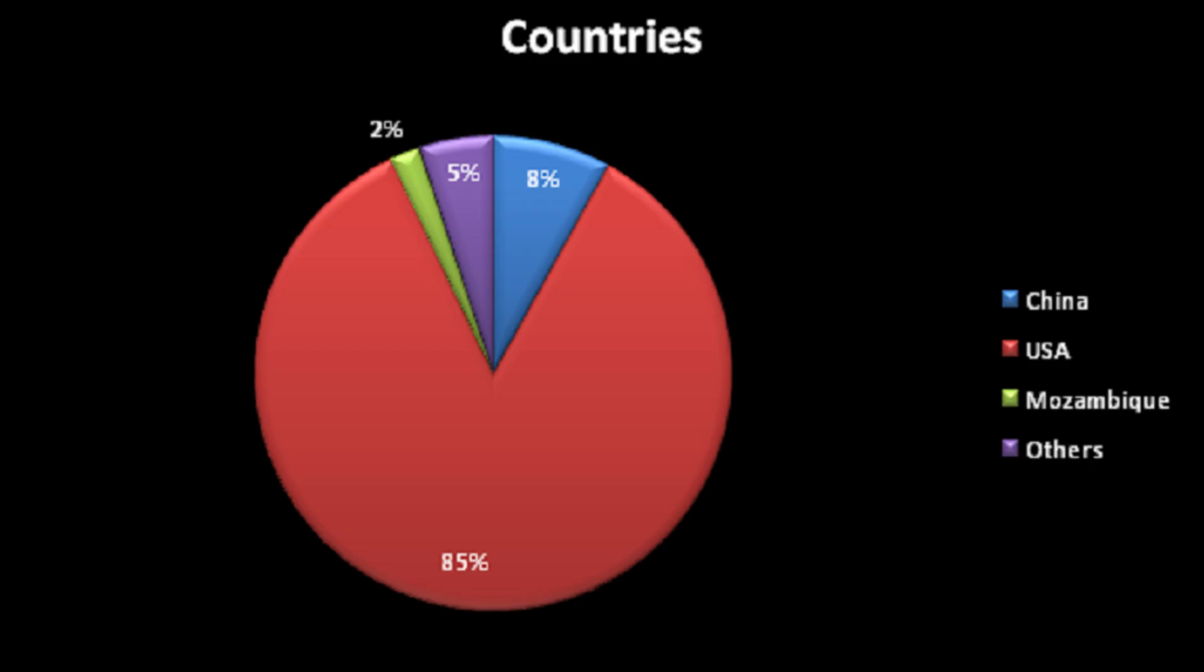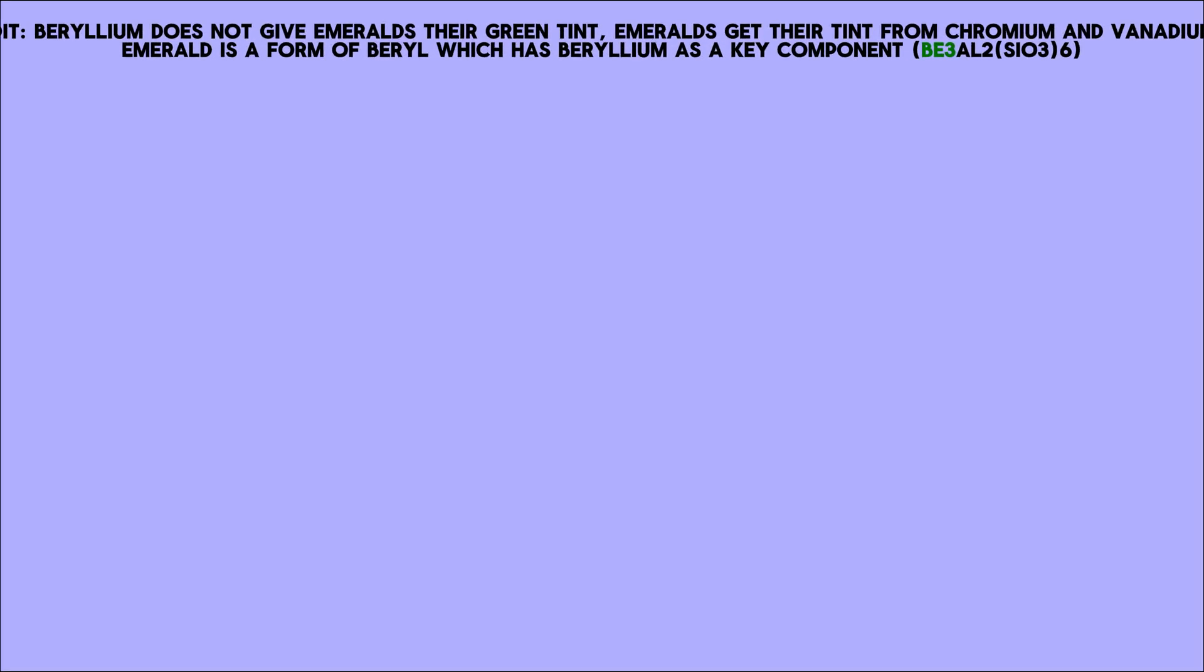In fact, it's so costly to extract that only three countries produce the metal: the US, China, and Kazakhstan, and it's mostly the US. But hey, beryllium is what gives emeralds their green tint.